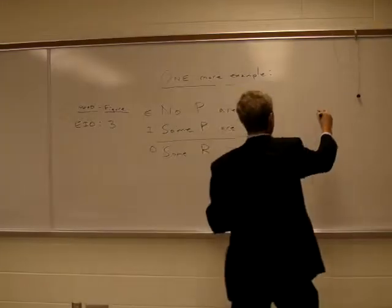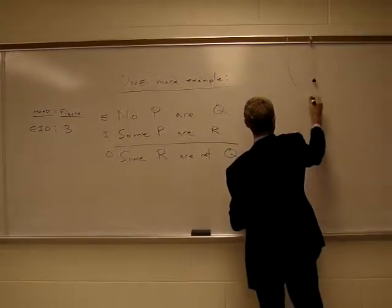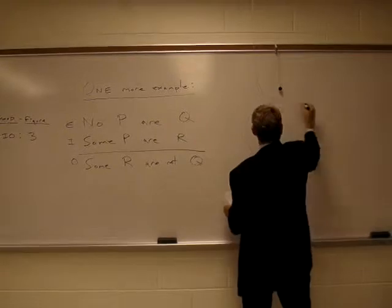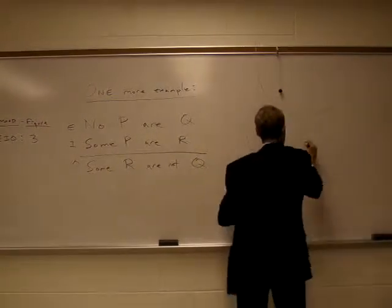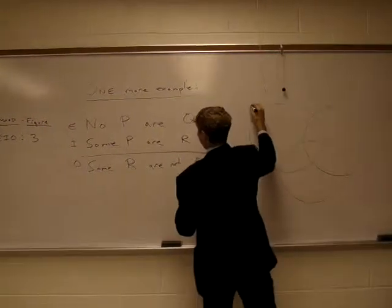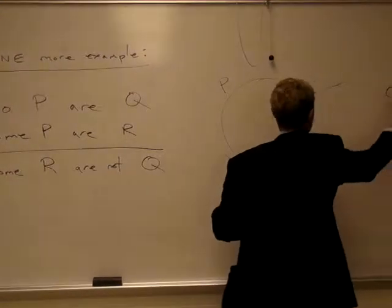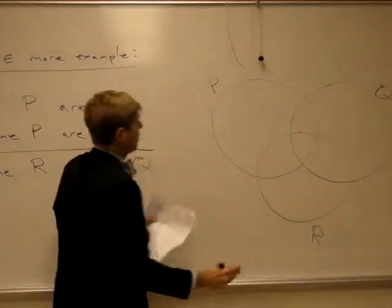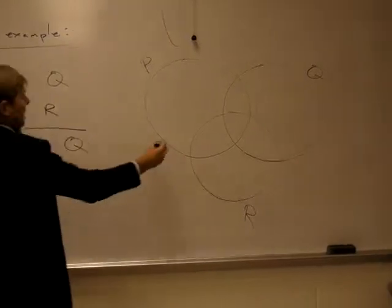Now we'll Venn diagram test this one. Our concentric circles are back, and my back is to you, that's not good for style. We have our P, Q, and R represented.